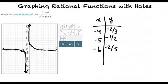So this is the graph of the function f(x) equals 2x plus 6 divided by x squared plus 4x plus 3.